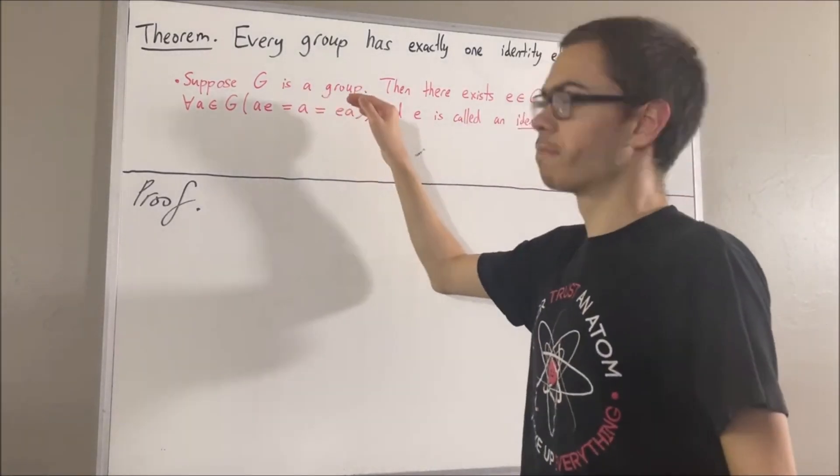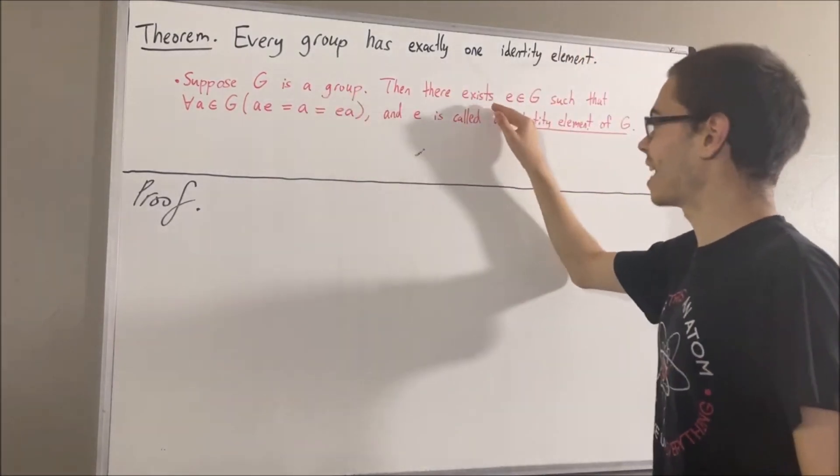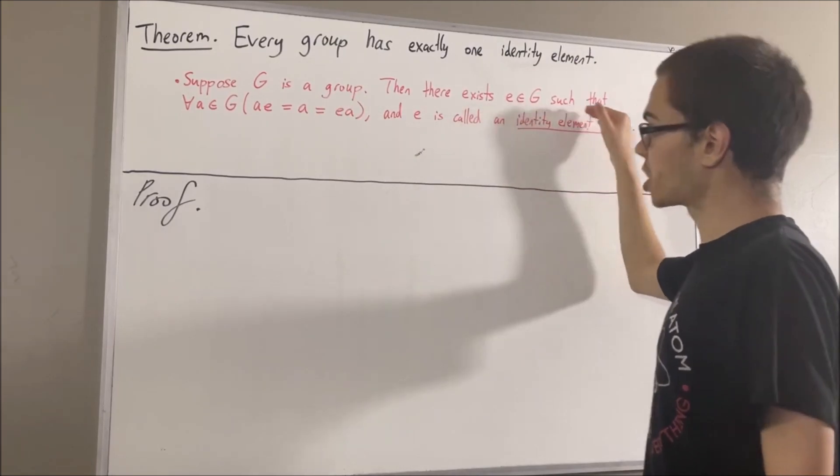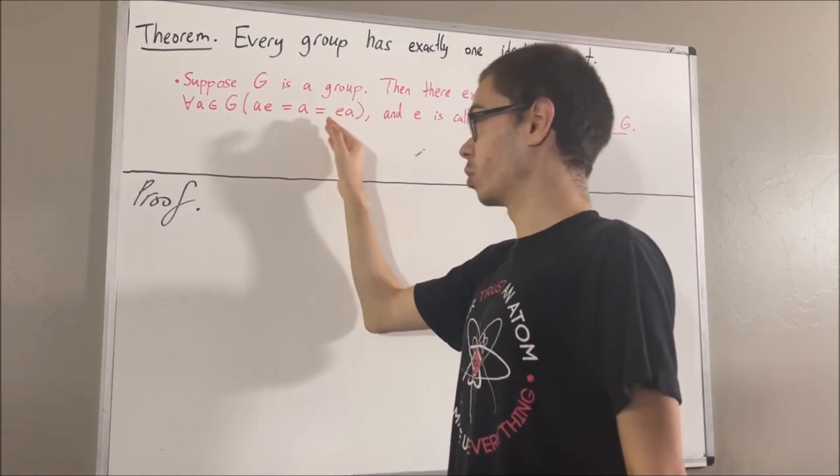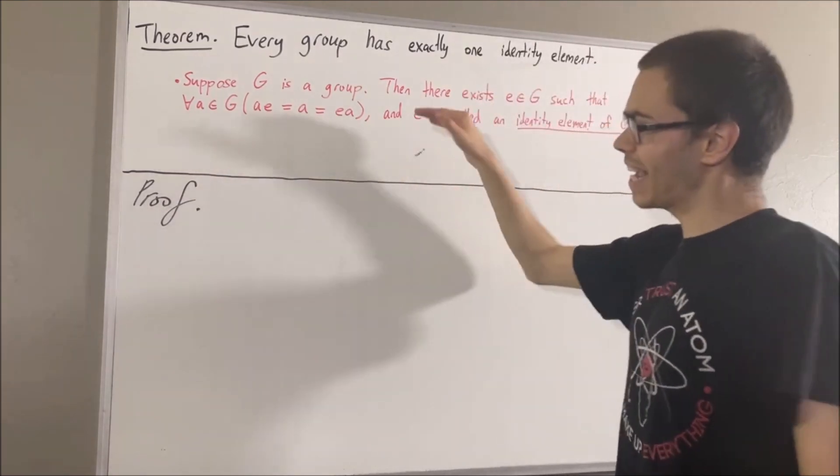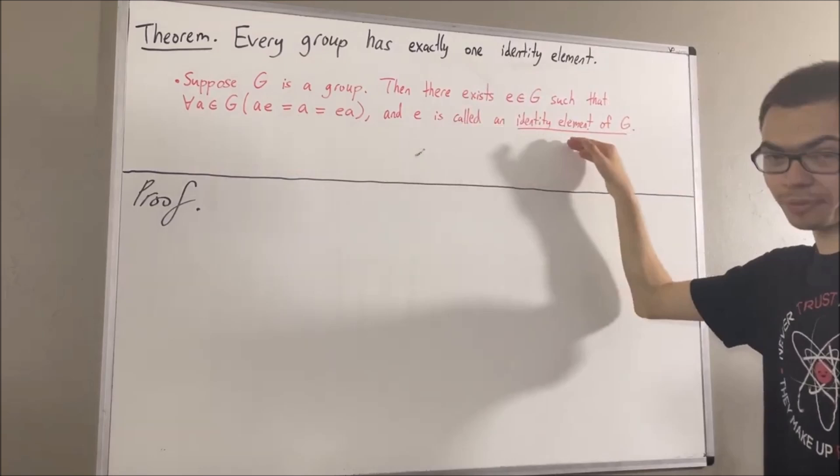Suppose G is a group. Then, there exists an element e in G, such that for all a in G, a times e is equal to a, which is equal to e times a. And e is called an identity element of G.